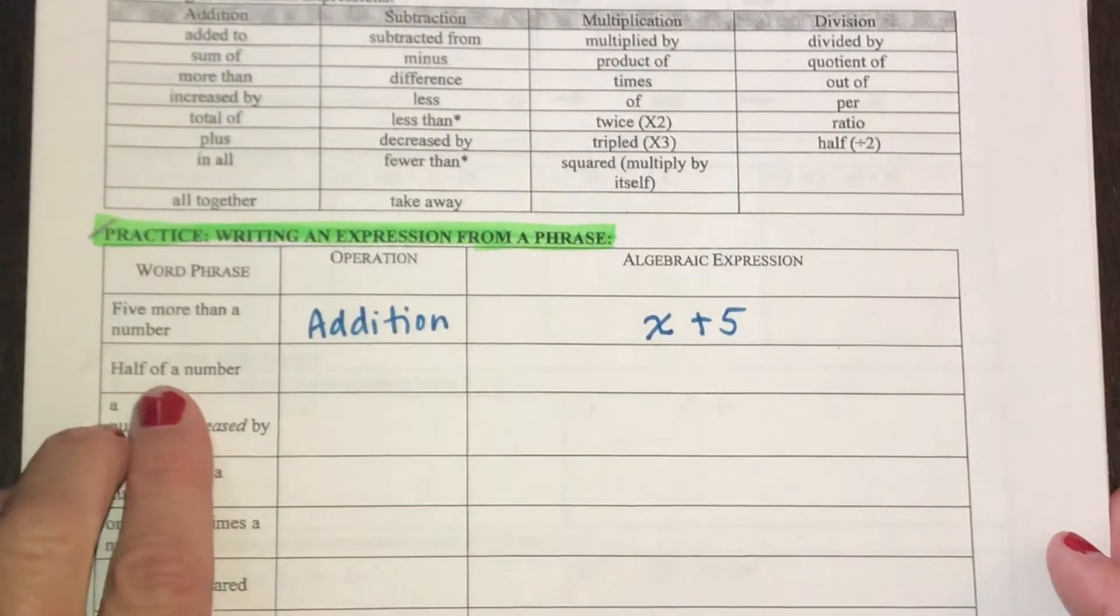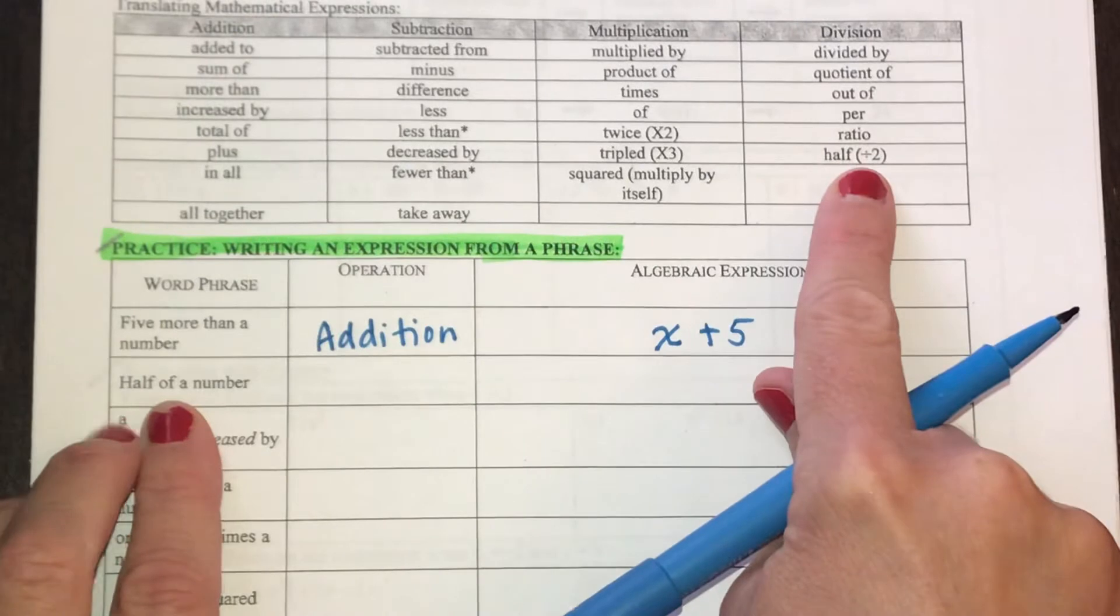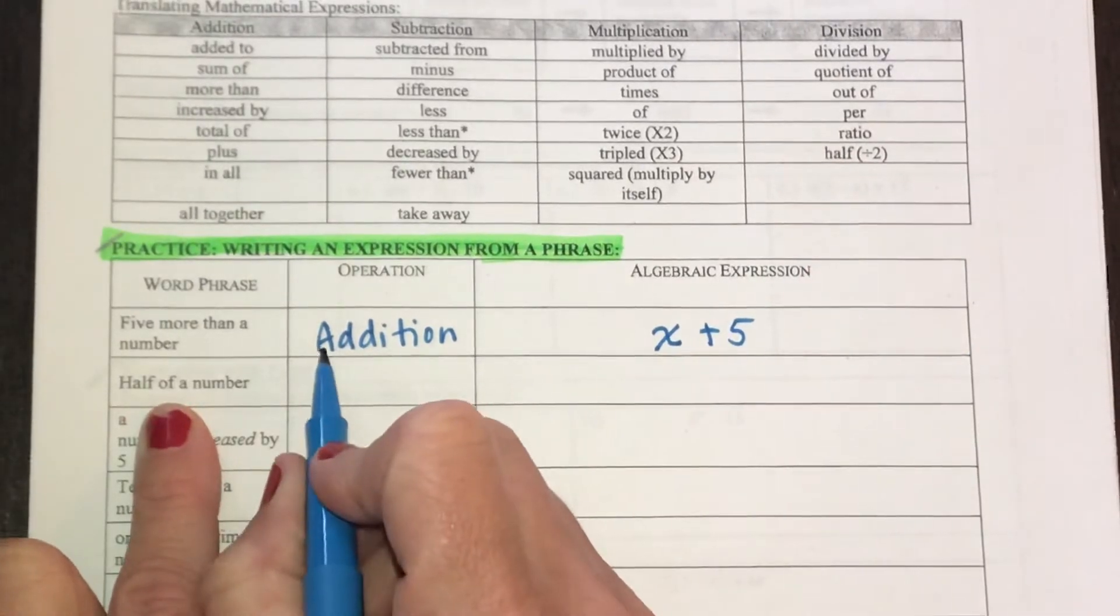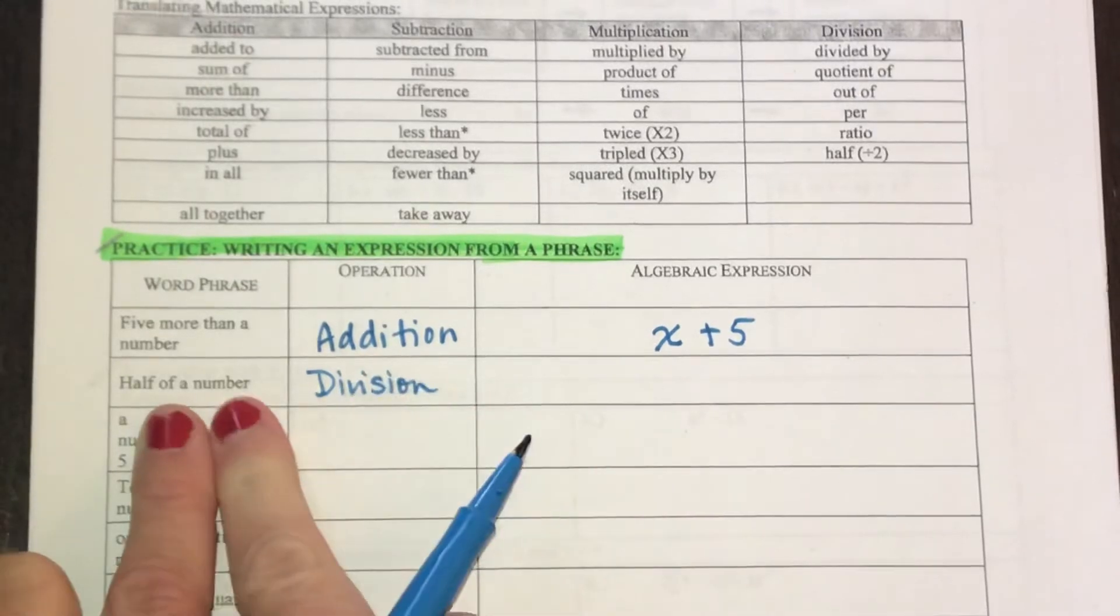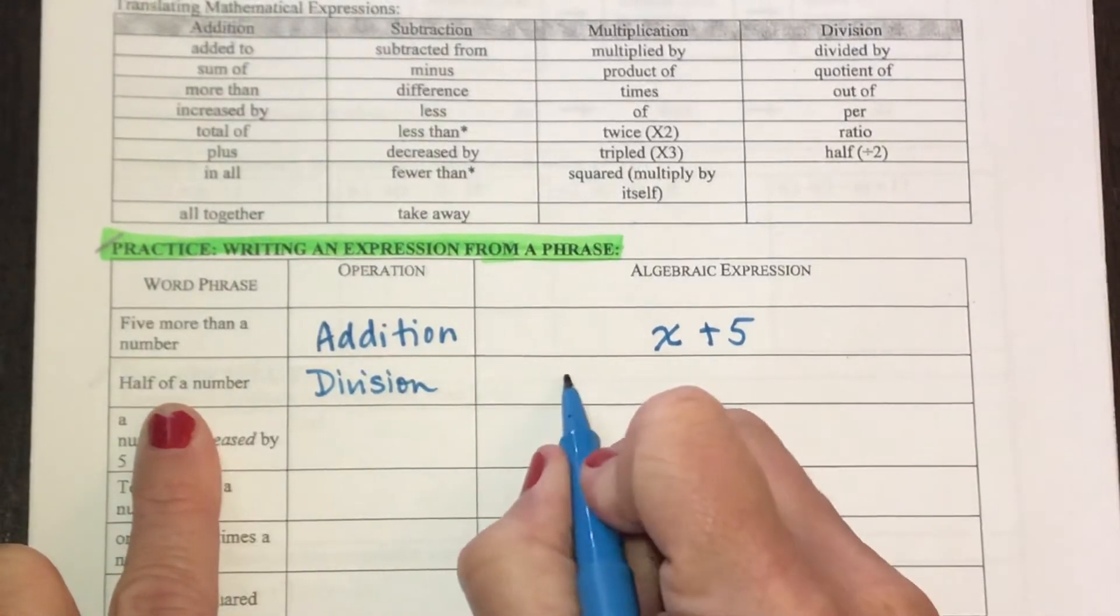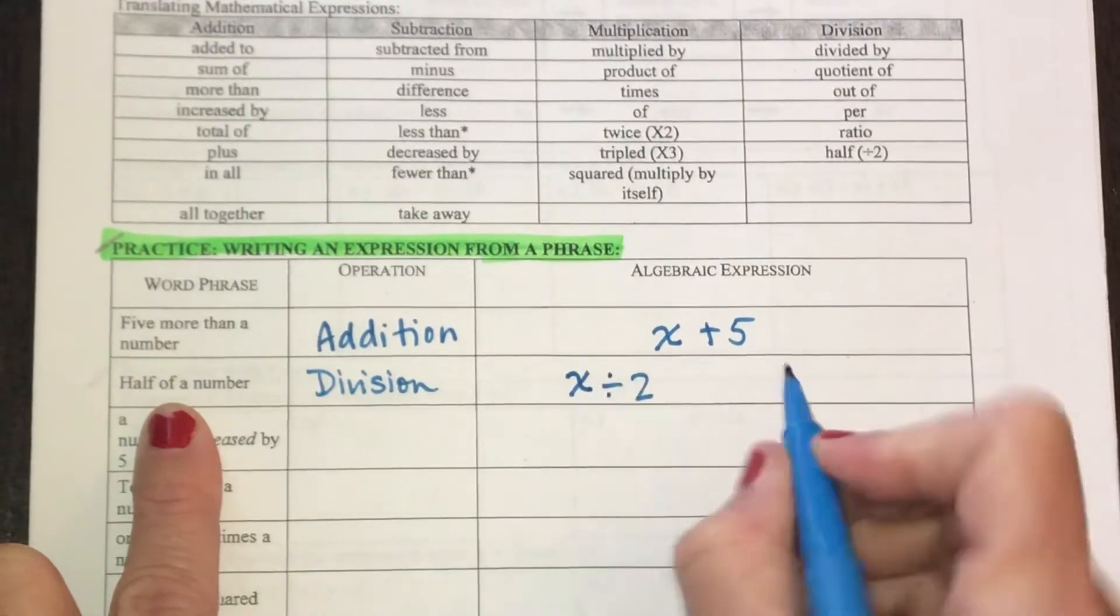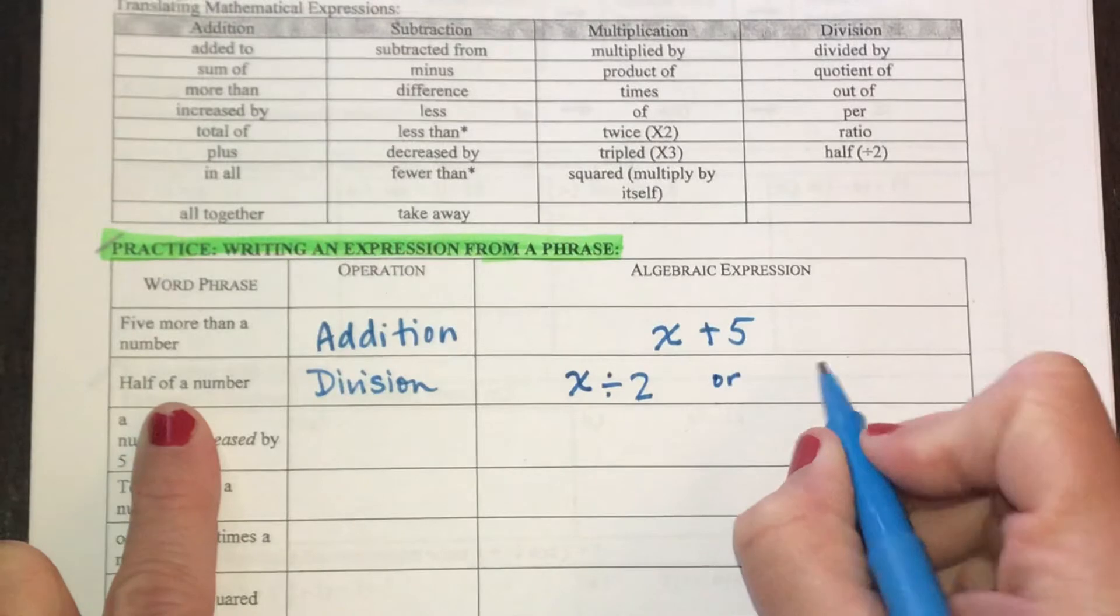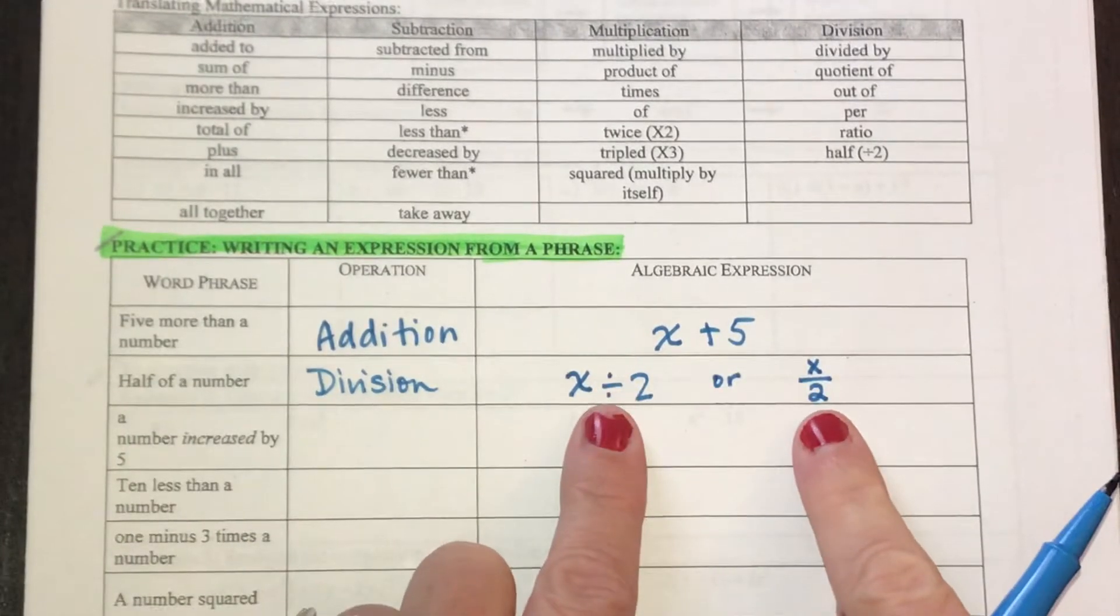The next one says here in the phrase half, half of a number. Now, half is right up here in the division column, so I'm going to write division. And if we're taking half of something, that means we're going to be dividing by two. So I need to know what I'm going to take and then divide by two. Or you could write it as an actual fraction, so X divided by two. Either of these would be perfect.